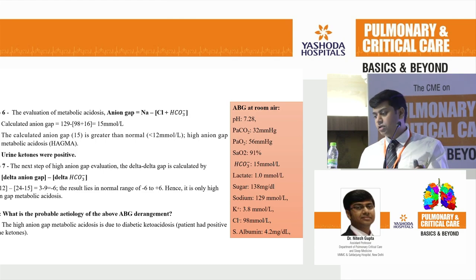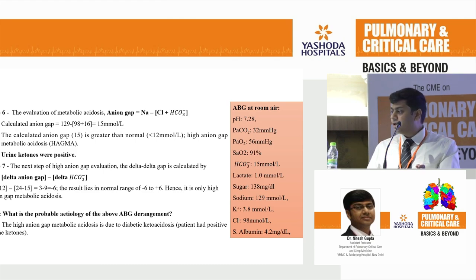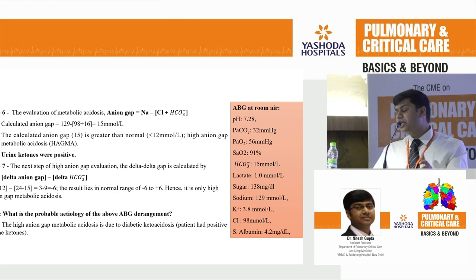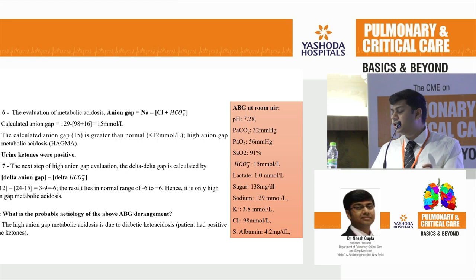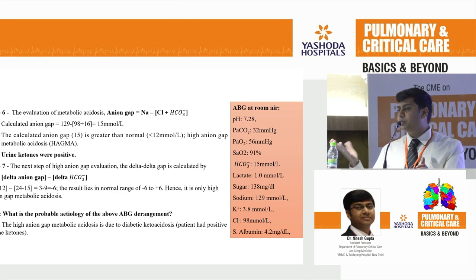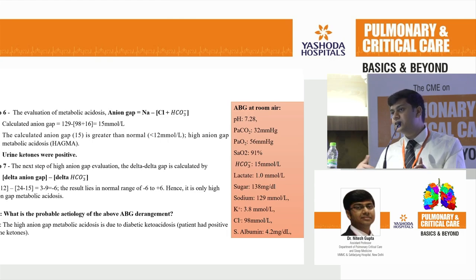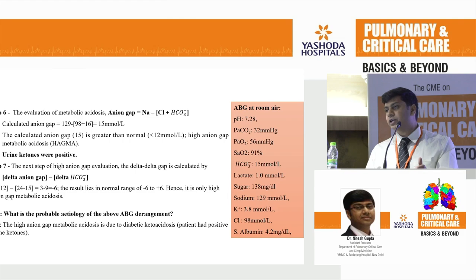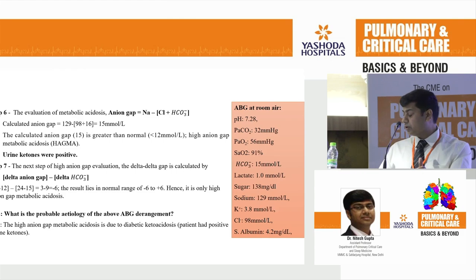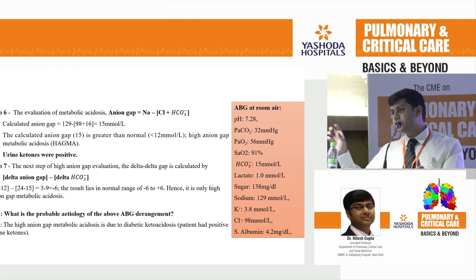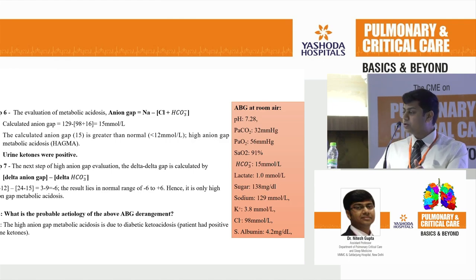ABG analysis basically requires practice with pen and paper — it cannot be done on-the-fly or with calculators. The back side of the ABG report is always blank, so you can write the entire interpretation there. In our ICU, we have a practice of writing the whole ABG workup on the back of the report itself, so the next person during rounds also finds it helpful for understanding.